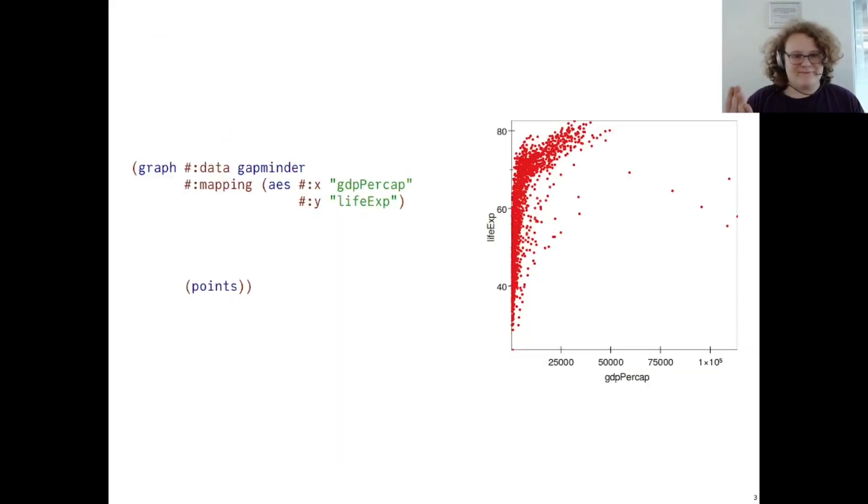Let's create a plot with Graphite. We start off with the graph function, which takes the data directly in its tabular form, and we map the x-axis to the GDP per capita variable, and the y-axis to the life expectancy variable. We then give Graphite a points renderer, which tells us to draw a scatter plot. This directly produces the image you see on the right.